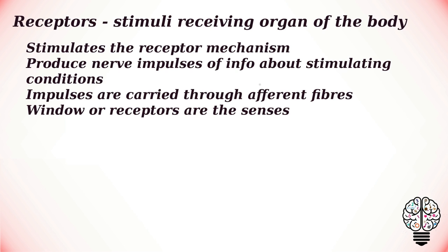In humans, receptors are the stimuli-receiving organs of the body; these are called sense organs. Sense organs are in fact windows through which information about various objects of the world is gathered. These are the primary organs of contact with the physical environment, because our cognition or awareness about the world depends upon sense organs. The stimuli from the external world stimulate or activate the receptor mechanism of the sense organs and produce nerve impulses carrying information about the present stimulating conditions. These impulses are carried through afferent fibers to the corresponding sensory area in the brain.